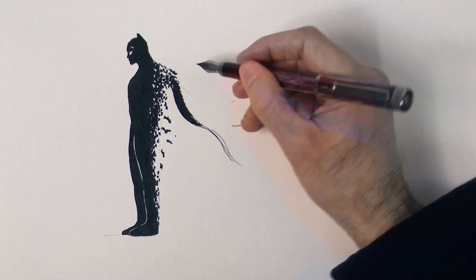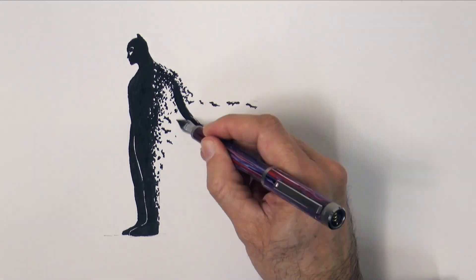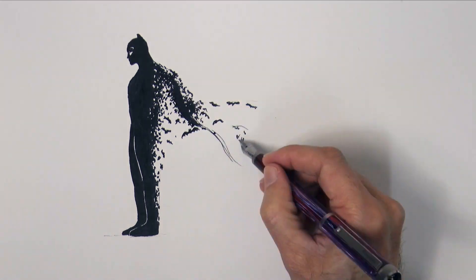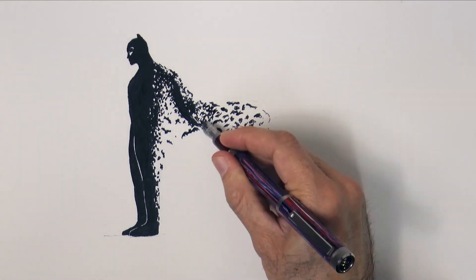So let's draw plenty of bats over here. At first just little dots and small shapes, and then they will turn into flying rodents.